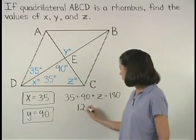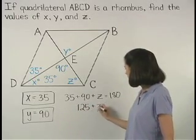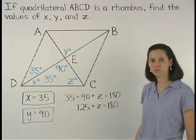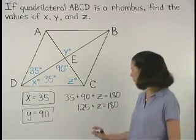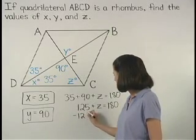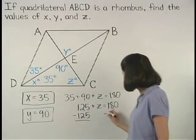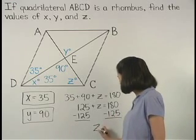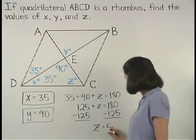And simplifying on the left side, we have 125 plus Z equals 180. And subtracting 125 from both sides, we find that Z equals 55.